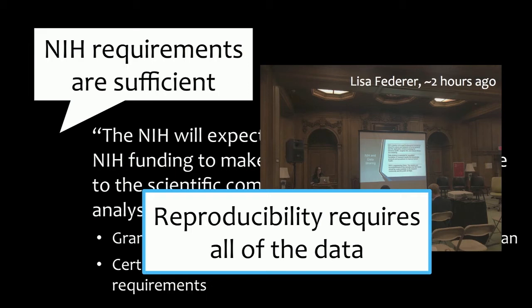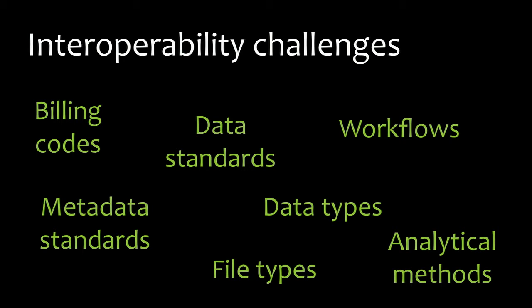Reproducibility requires all of the data. Back in my ecology days, I did a study of what types of data were being shared, and what I found was that none of the data was being shared except for genetic sequences — because that was the one with a repository and a requirement. All the other data associated with publications could not be found anywhere. I think it's true also for cancer data. There are also lots of interoperability challenges. If anybody's ever tried to combine two data sets from two different organizations, you know that it's virtually impossible. I've hired a person who has spent the last two months trying to combine two data sets on ovarian cancer.